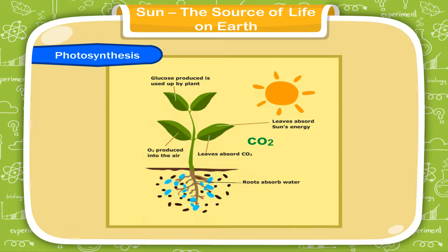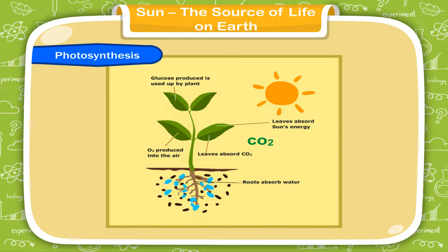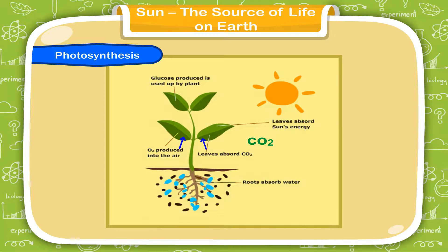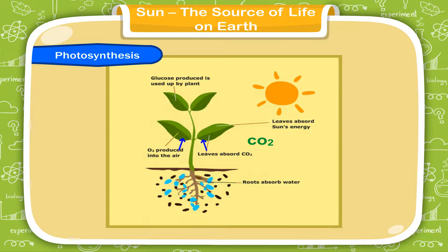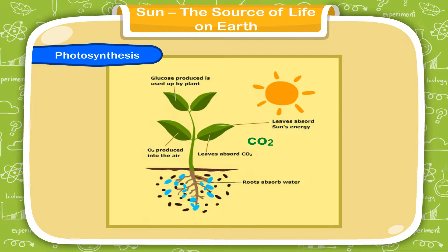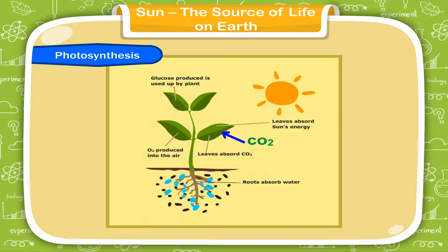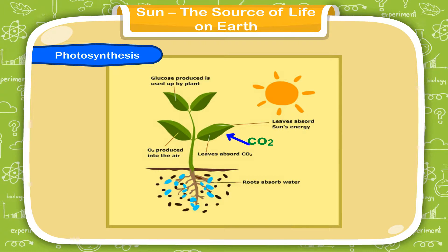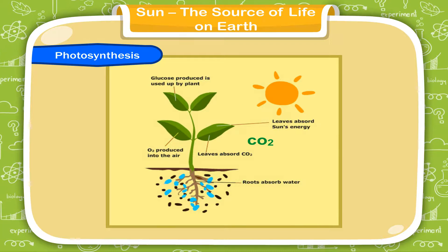This process is called photosynthesis. The plant absorbs water from the soil through its roots and sends this to the stem and then to the leaves. The water is taken to all parts of a leaf by the veins. Leaves absorb carbon dioxide from the air through the stomata. The chlorophyll in the leaves traps the sunlight to get energy for preparing the food.